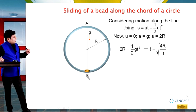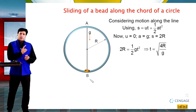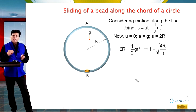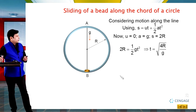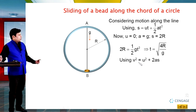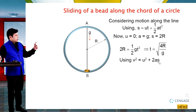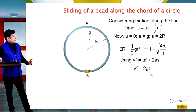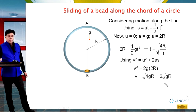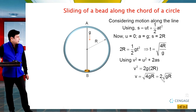Now let us find the velocity at point B. We know initial velocity u = 0 and displacement = 2R. Using the formula v² = u² + 2as, we get v = √(4gR), which can be written as 2√(gR). This is the velocity of the bead when it reaches point B.